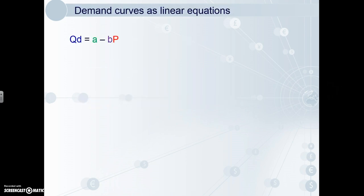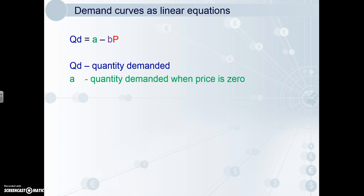This is what a linear demand equation looks like: QD equals A minus BP. QD is, of course, quantity demanded. A is the quantity demanded when price is zero, and negative B is the slope of the curve. As we know, demand curves have a negative slope due to the inverse relationship between price and quantity demanded — hence the negative in the equation.